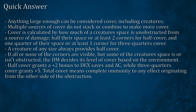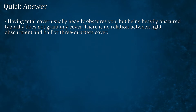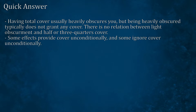Half cover grants a plus two bonus to dex saves and AC, while three quarters cover grants plus five. Total cover means complete immunity to any effect originating from the other side of the obstruction. Having total cover usually heavily obscures you, but being heavily obscured typically does not grant any cover. There is no relation between light obscurement and half or three quarters cover. Some effects provide cover unconditionally, and some ignore cover unconditionally.